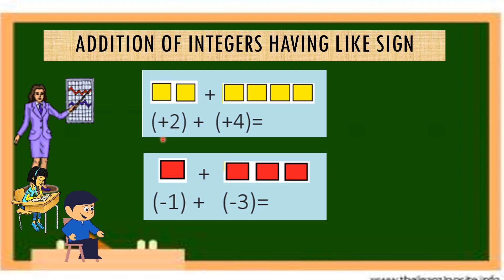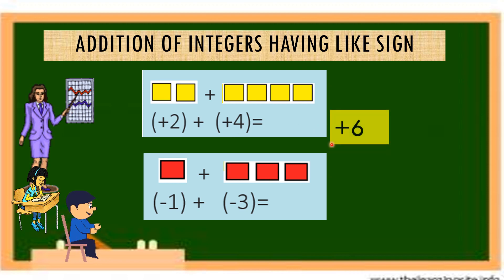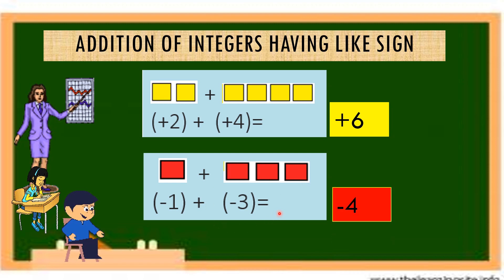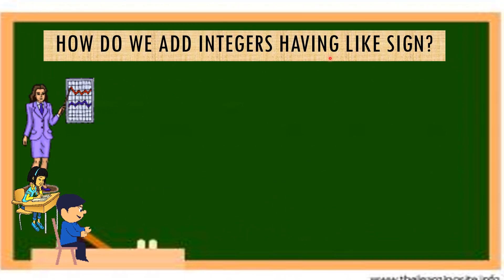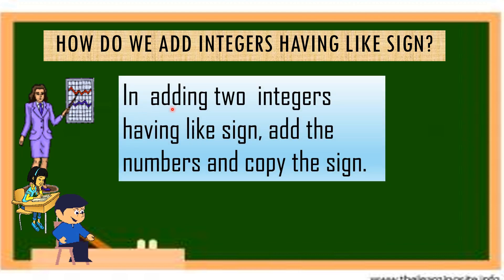For the next figures: positive 2 plus positive 4 gives a result of positive 6. Negative 1 plus negative 3 gives an answer of negative 4. So, in adding two integers having like signs, just add the numbers and copy the sign.